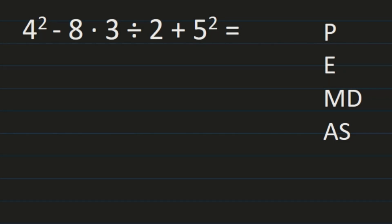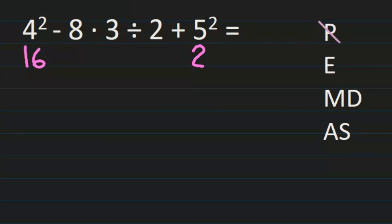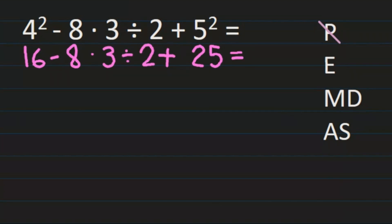In this example we have two exponents. Using PEMDAS, I start with grouping symbols — I don't see any, so I'm starting with exponents. The first exponent is 4 squared, which is 16. Then I see 5 squared at the end of the problem. 5 squared is 25, because 5 times 5 is 25. Bringing down the rest of the problem: 16 minus 8 times 3 divided by 2 plus 25. Make sure you bring down everything carefully and correctly.